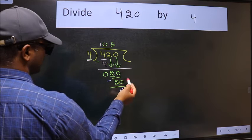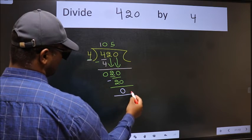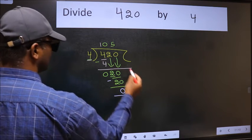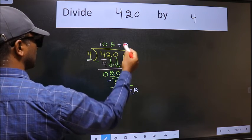No more numbers to bring it down. So we stop here. This is our remainder and this is our quotient.